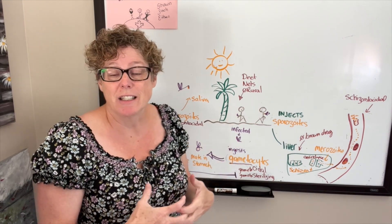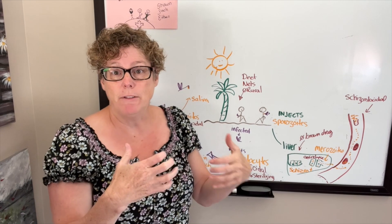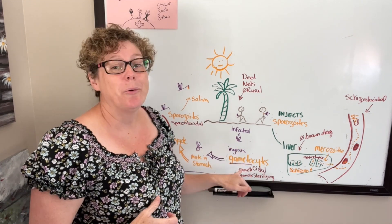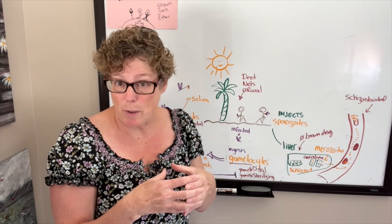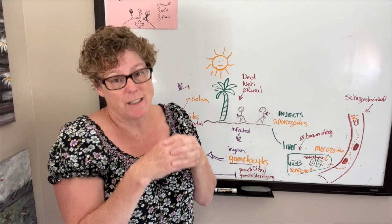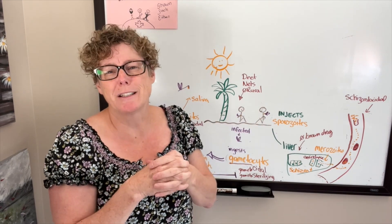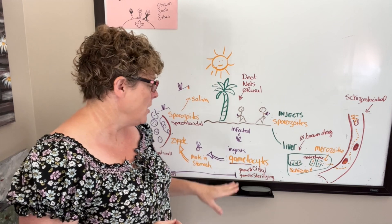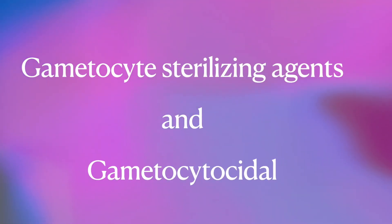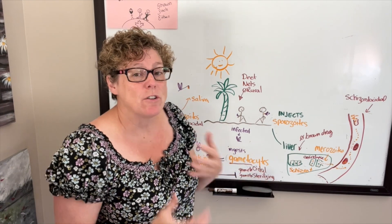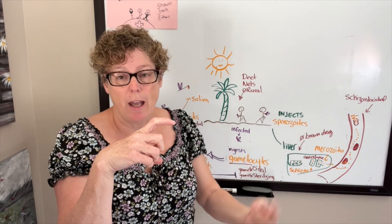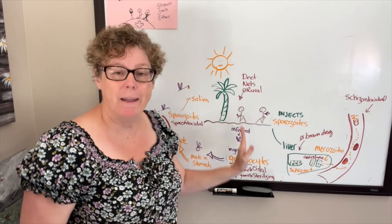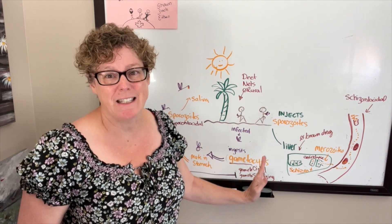Once the mosquito has taken the blood meal, it has ingested gametocytes — the male and female plasmodium. We can actually sterilize those gametocytes so they can't reproduce and cause them to burst and kill themselves. We call these gametocyte sterilizing agents, or gametocytocidal. These are medications we would take such that when the mosquito takes the blood meal, they have that effect inside the mosquito.